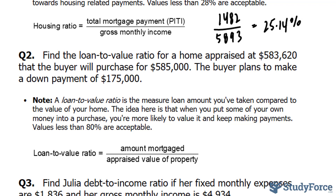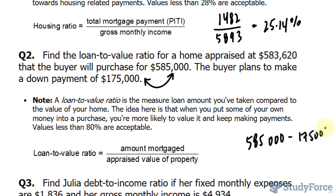The question reads: find the loan to value ratio for a home appraised at $583,620 that the buyer will purchase for $585,000. The buyer plans to make a down payment of $175,000. So what we do here is take the amount mortgaged — since they are seeking a mortgage for the difference between these two numbers, if we subtract them we get $410,000. This is how much they need as a loan.